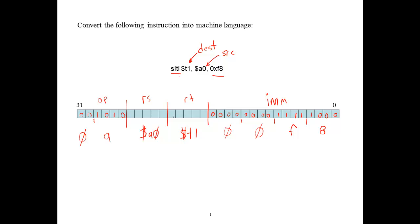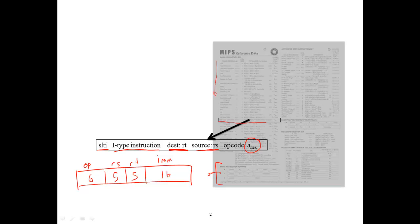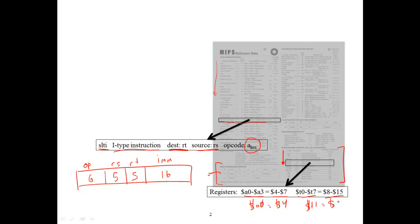In order to figure out the binary encoding of these two values, we again return our attention to the MIPS reference data sheet. In the bottom right corner is information about registers. We can scan this column looking for the registers we care about. Registers A0 through A3 correspond to registers 4 through 7, so A0 is the same as register 4. And T0 through T7 correspond to registers 8 through 15, so T1 is the same as register 9.